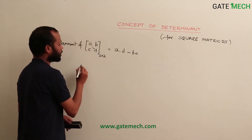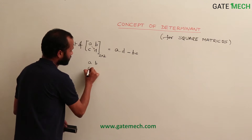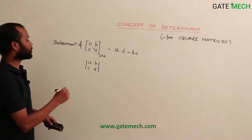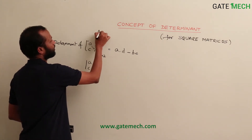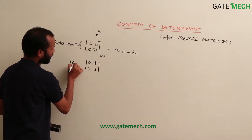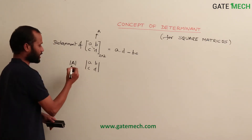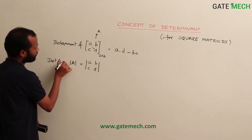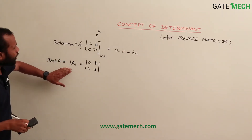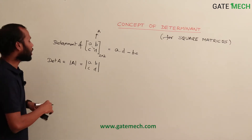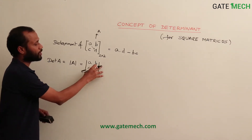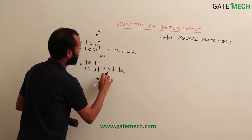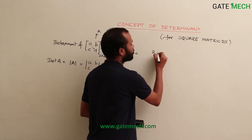The determinant is usually represented with vertical bars — written as |a b; c d|. Suppose this matrix is called A; it can also be represented as det(A) or |A|. All three notations represent the determinant of the same matrix, which equals a·d minus b·c.